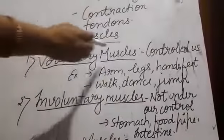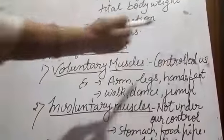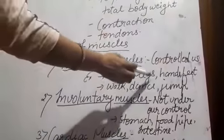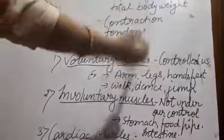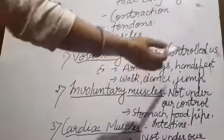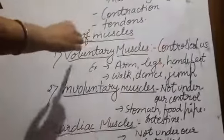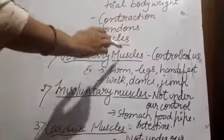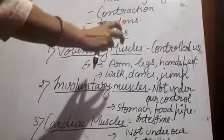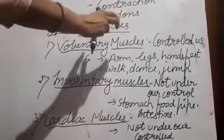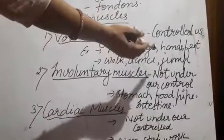There are three types of muscles. The first is voluntary muscles, which are under our control. Our arms, legs, hands, and feet — whatever we do, like walking, dancing, and jumping, all the muscles that participate are voluntary. These are attached to bones and are present in the arms, legs, and hands.